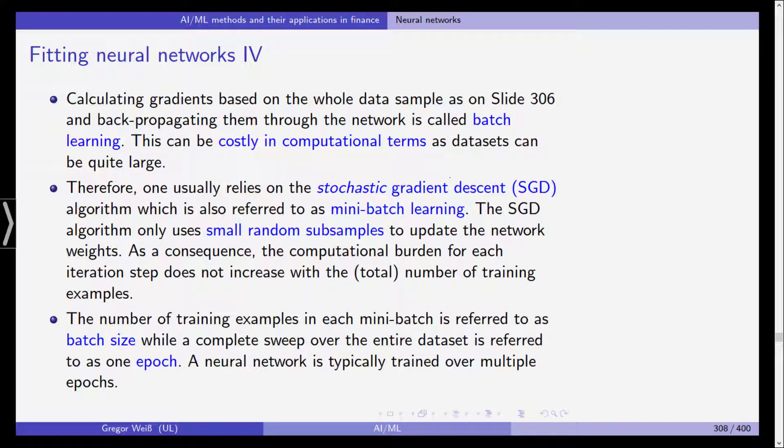Therefore, what one does is one usually relies on the so-called stochastic gradient descent or SGD algorithm, which is also referred to sometimes as mini-batch learning. And what you do is you select small random samples. You concentrate on randomly selected smaller samples to update the network weights. And as a consequence, the computational burden for each iteration, this is an iterative procedure, it does not increase with the total number of training examples because you keep the size of those random subsamples fixed and you can increase the training data, but the mini-batches will remain of the same size.